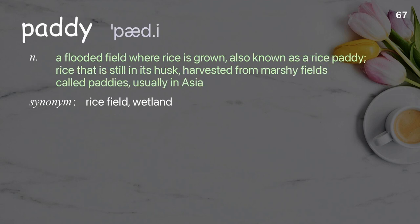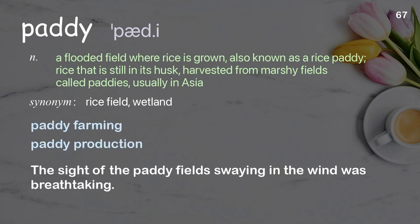Paddy: A flooded field where rice is grown, also known as a rice paddy; rice that is still in its husk, harvested from marshy fields called paddies, usually in Asia. Examples: Paddy farming, paddy production. The sight of the paddy fields swaying in the wind was breathtaking.